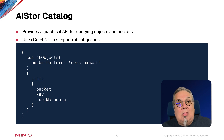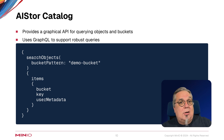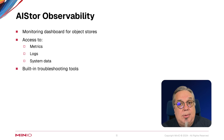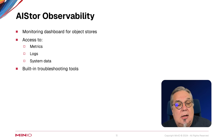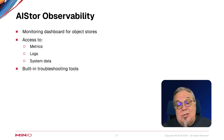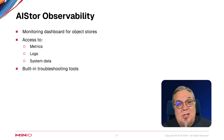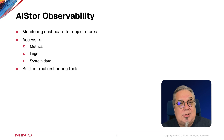This is going to allow you to very easily find any object that you've uploaded anywhere in your deployment. AI Store observability is a monitoring dashboard for object stores. It gives you access to metrics, logs, and system data, and also gives you access to built-in troubleshooting tools — the same sort of troubleshooting tools that MinIO engineers use directly to help our enterprise customers.